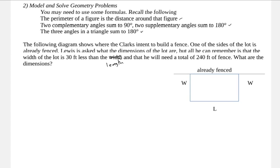On some of these problems, we will want to be needing to use some of the geometry formulas. These formulas might include things like the perimeter. Remember that the perimeter is the distance around a figure. We might need to use the fact that two complementary angles sum to 90 degrees and that two supplementary angles sum to 180 degrees. And we might need to use the fact that the three angles in a triangle sum to 180 degrees. These are just a few examples of formulas that we might use.